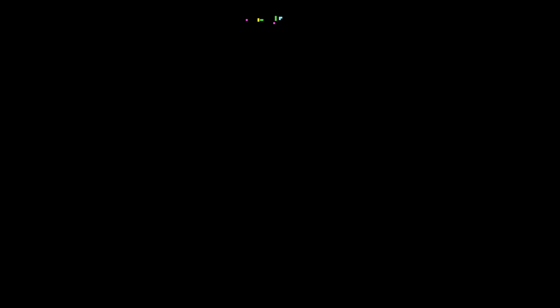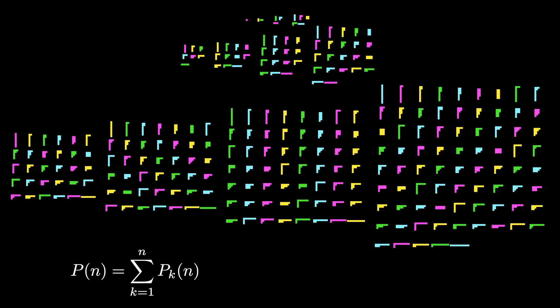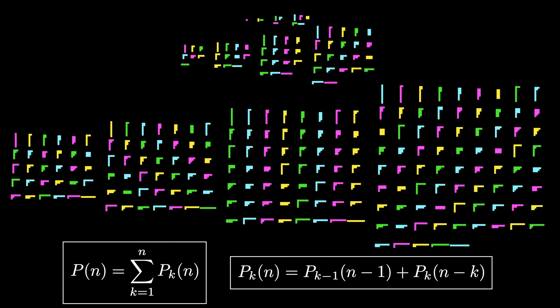We now see that we do not need to enumerate all of the partitions to know how many there are. Instead, we can use the two formulas that we just encountered to find the number of partitions of size n. Namely, the number of partitions of n is equal to the sum of the number of partitions of n into k parts where k ranges from 1 to n, and the number of partitions of n into k parts satisfies the recursion given here. Of course, this is only one such technique to count the number of partitions of n. Can you think of a different way to count them?